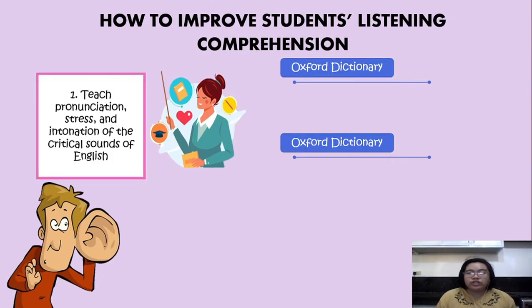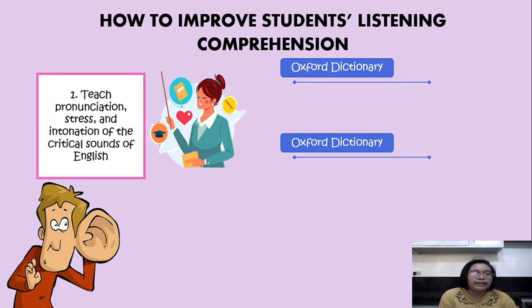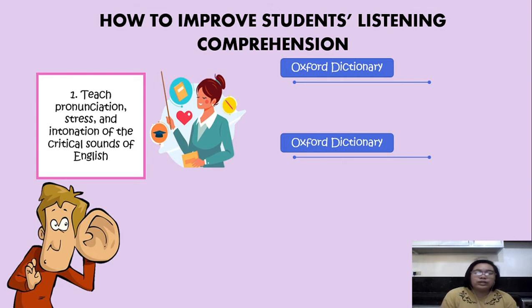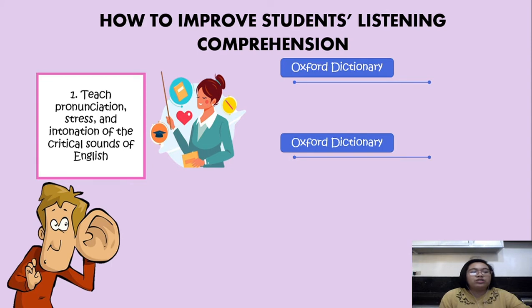First, it is suggested for teachers to teach pronunciation, stress, and intonation of the critical sounds of English. When a speaker says something, certain words or phrases have a higher pitch while others have a lower pitch. By learning the rules of intonation and stressed and unstressed syllables, we will also be able to know the various sounds and pronunciation of words in English. Actually hearing the way that pitch and stress change in a natural conversation will help us execute correct intonation when we speak, and it will also give us the chance to develop our listening comprehension skills.